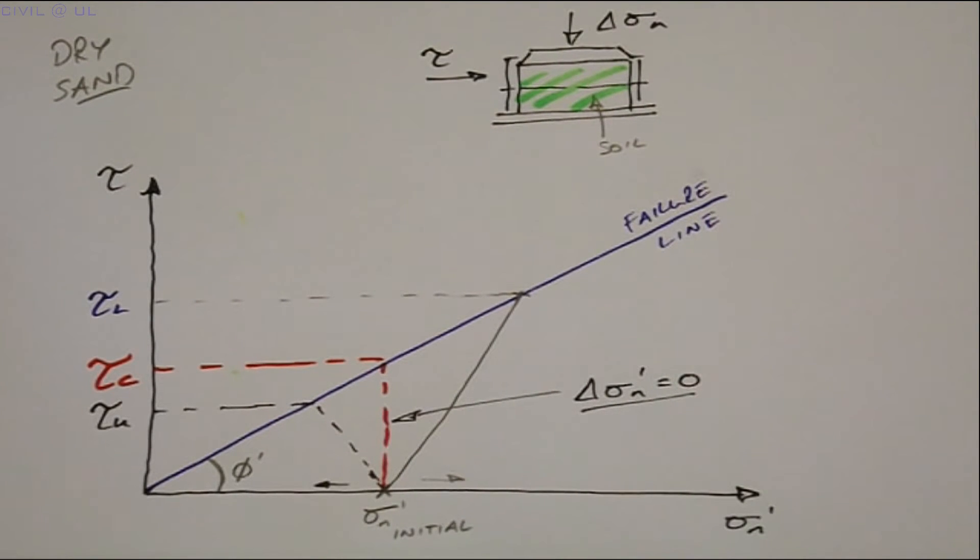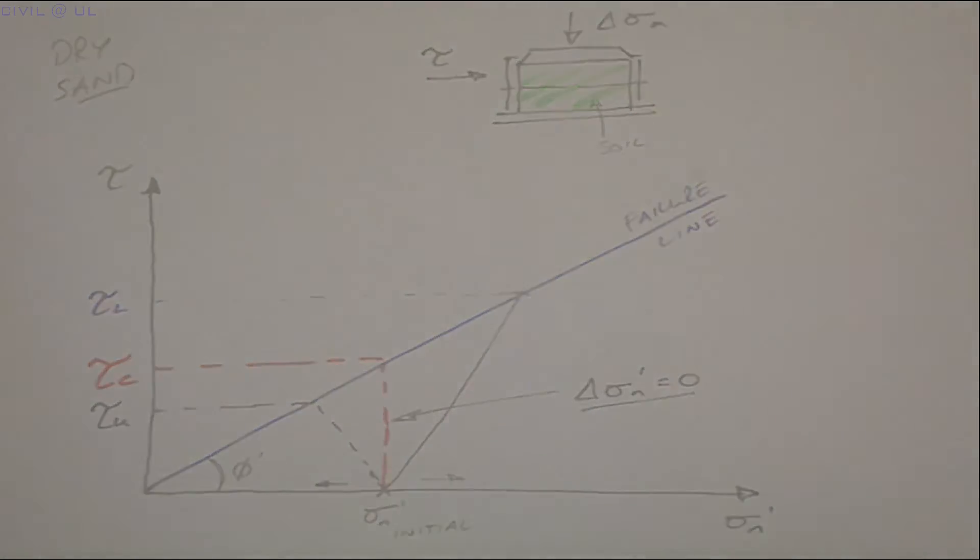And while this is convenient and simplifies our analysis, in reality the average effective normal stress in the ground almost never remains constant during shearing.